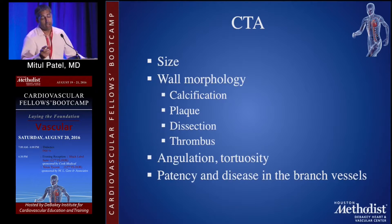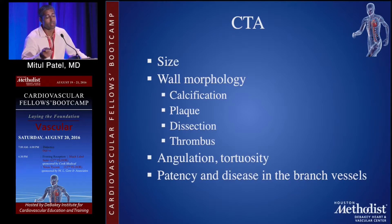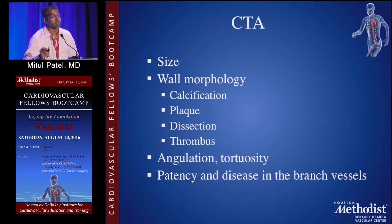CTA gives you the size of the aneurysm and landing zones for treatment. You can see wall morphology — whether there is calcium, plaque, dissection, or thrombus. You can also assess angulation, tortuosity, and the patency and disease in the branch vessels.